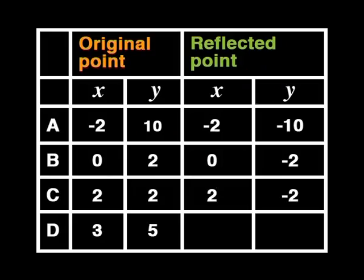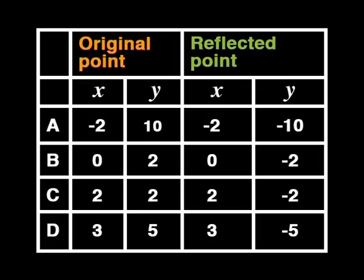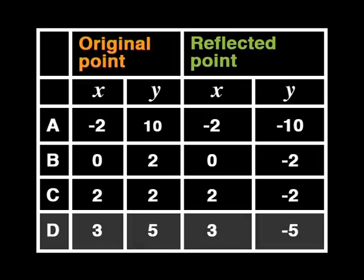And the point that was 2 and 2 is now 2 and minus 2. Hold on. I think I see a pattern here. Check if I'm right. The point that was at 3 and 5 is now 3 and minus 5. Well done, Saboho.